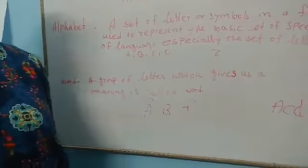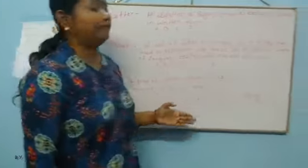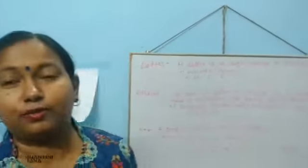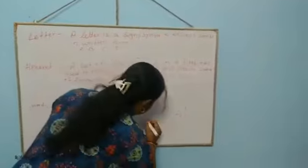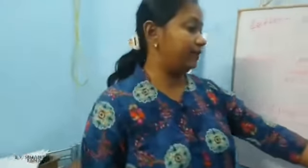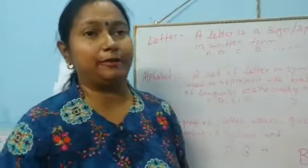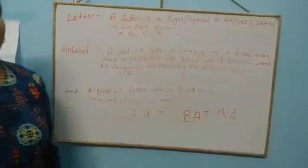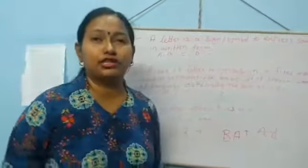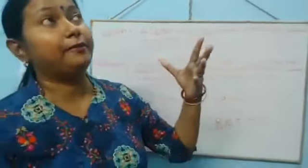For example, if we write B, A, B, T — you cannot make any meaningful word from that, and you cannot pronounce it properly either. But if we write B, A, T — that gives us 'bat.' When we say 'bat,' a picture or idea comes to our mind — like a cricket bat. So that is a word — it gives us a clear picture or idea.